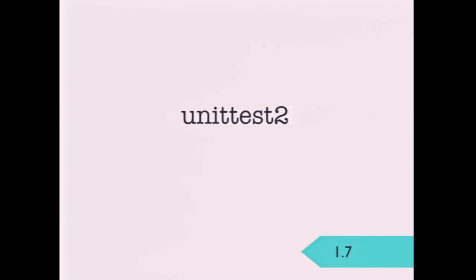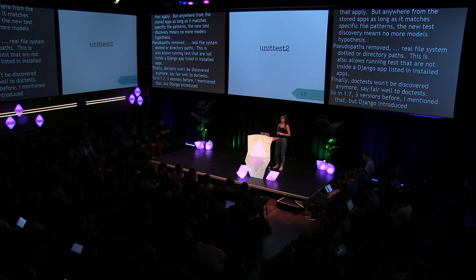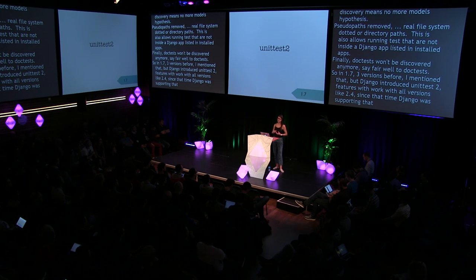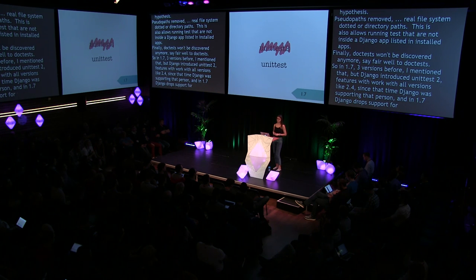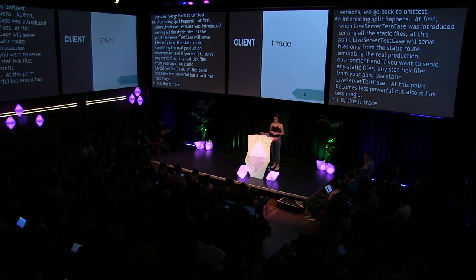In 1.7, Django dropped support for older Python versions and went back from unittest2 to unittest. Unittest2 was a backport of unittest features for older Python versions like 2.4. An interesting split happens: at first LiveServerTestCase served all static files, but at this point it will only serve files from the static root, simulating a real production environment. If you want to serve static files from your app, use StaticLiveServerTestCase. LiveServerTestCase becomes less powerful but also has less magic. And in 1.8, TRACE is added — the client HTTP methods list is now complete.